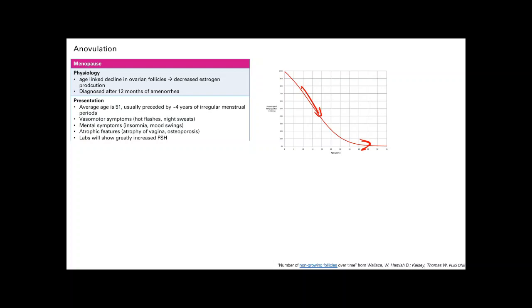And then there's atrophic features. Because estrogen is key to maintaining the vagina, it's key for bone health. So if you lose the estrogen, your vagina can become dry, it can become atrophic and thinned out. And you can be at risk for osteoporosis.